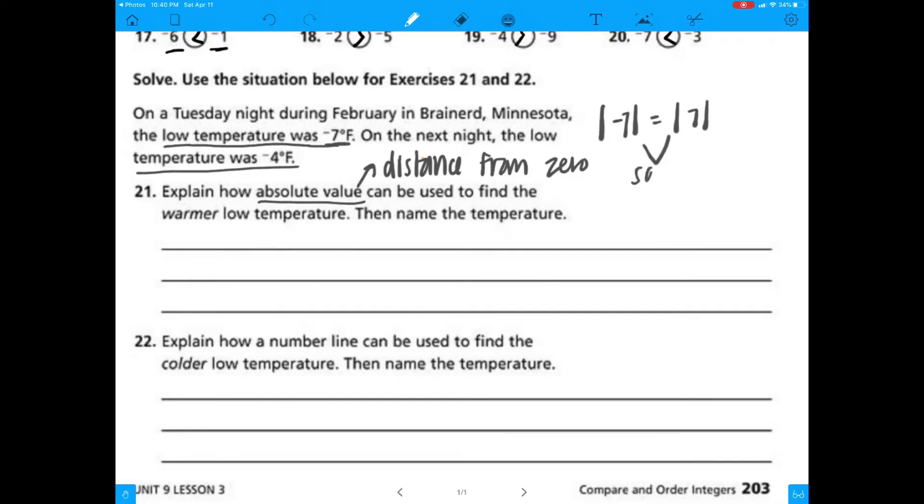So how can we explain absolute value, or how can absolute value be used to find the temperature, the warmer low temperature? I was explaining this above, and you can kind of see it in numbers 17 through 20. But when you're looking at absolute value, you're looking at that distance from 0.